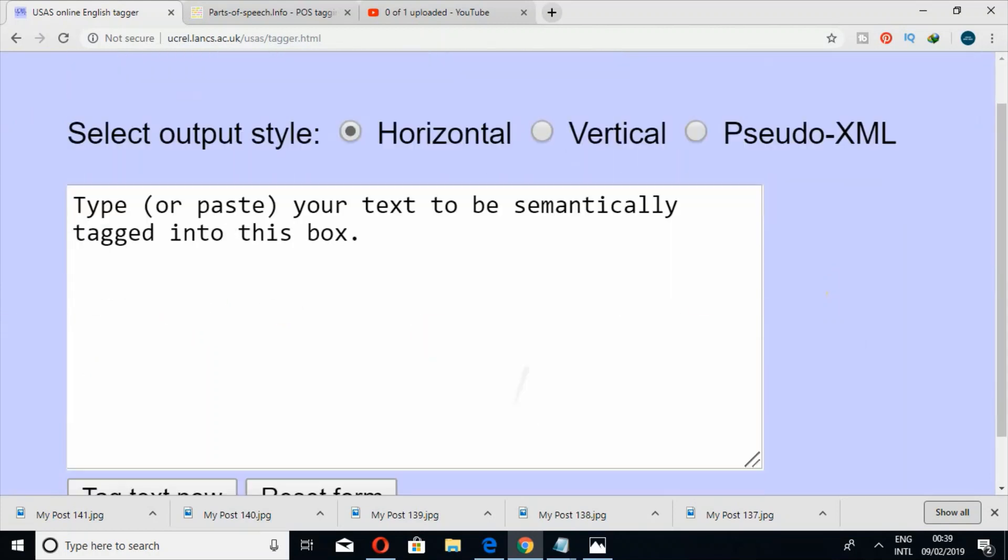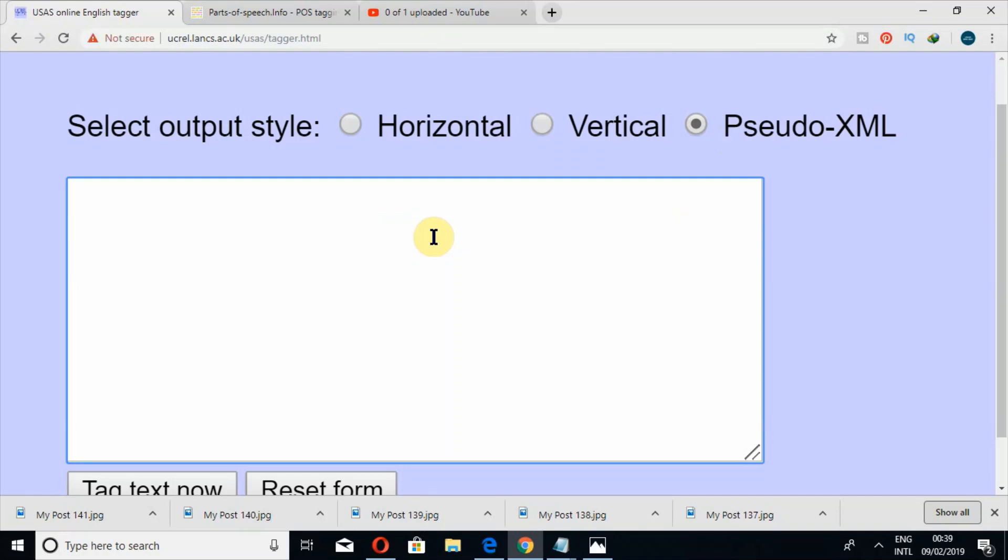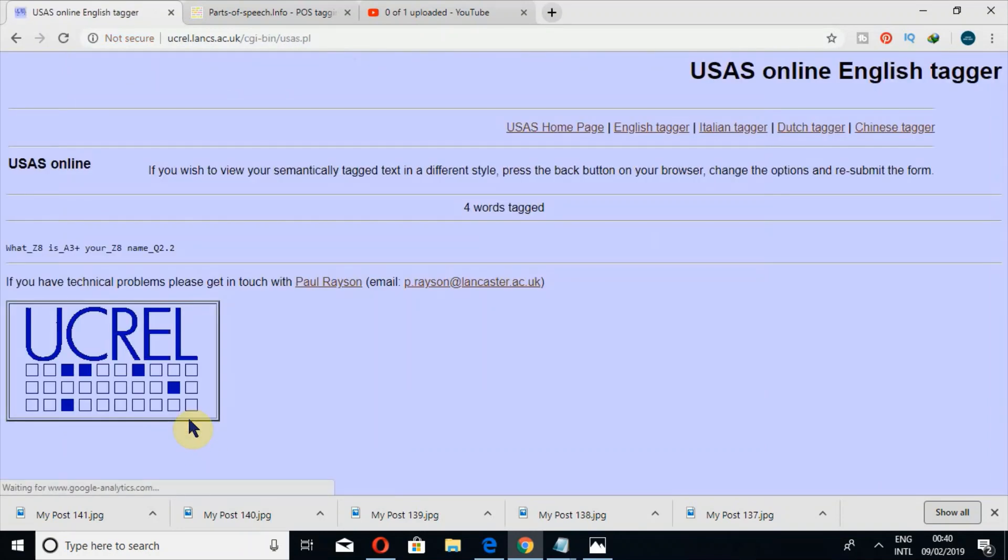Now select output style: horizontal, vertical, or pseudo XML. Pseudo XML is used when you want to tag your data both in a semantic form and in POS form—parts of speech. The clause tagger is not working nowadays, so because clause tagger is solely for parts of speech purposes and it tags according to parts of speech, and USAS tags according to semantics. Let me select horizontal and write 'What is your name?' and then press the button Tag Text Now.